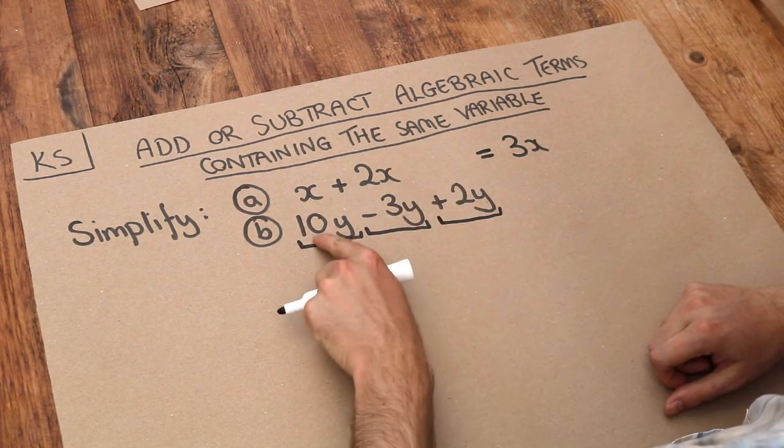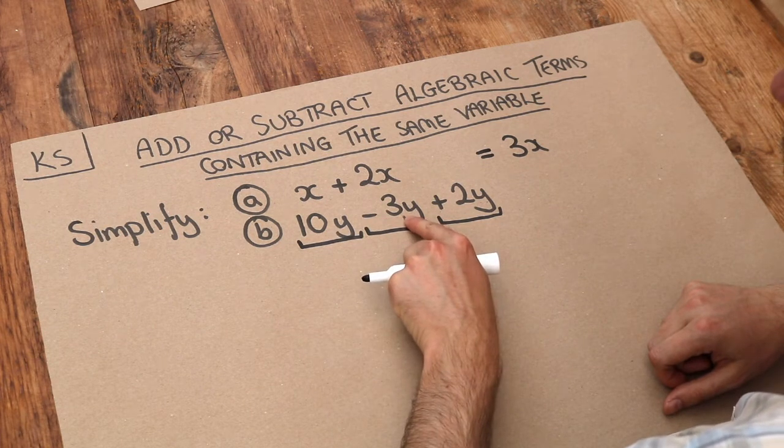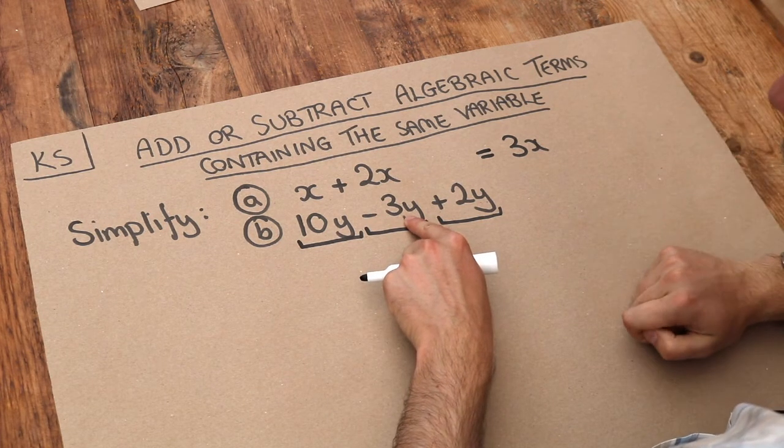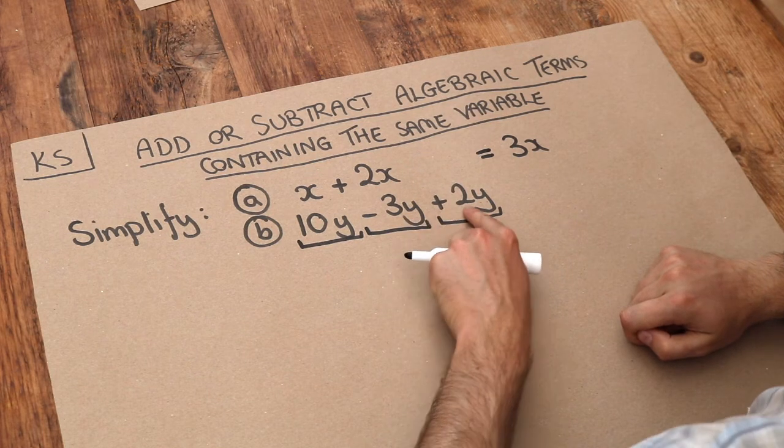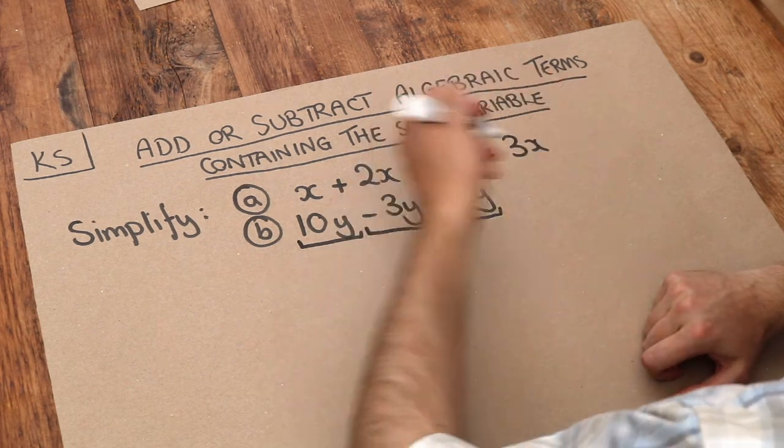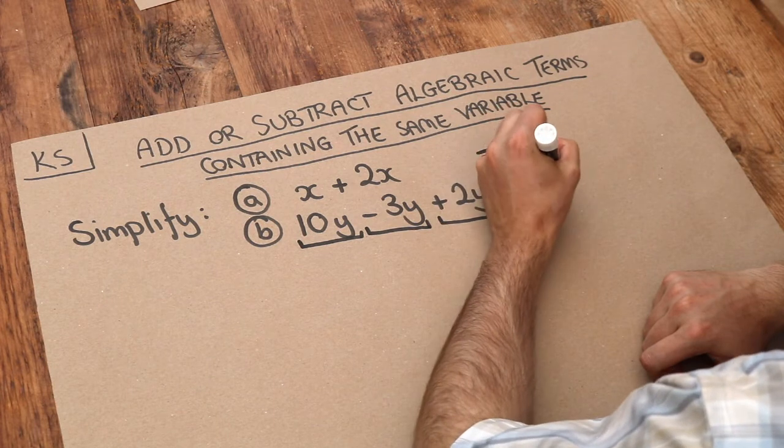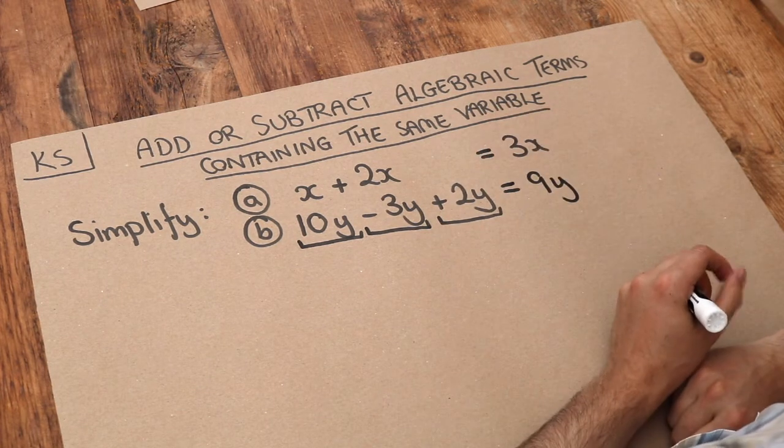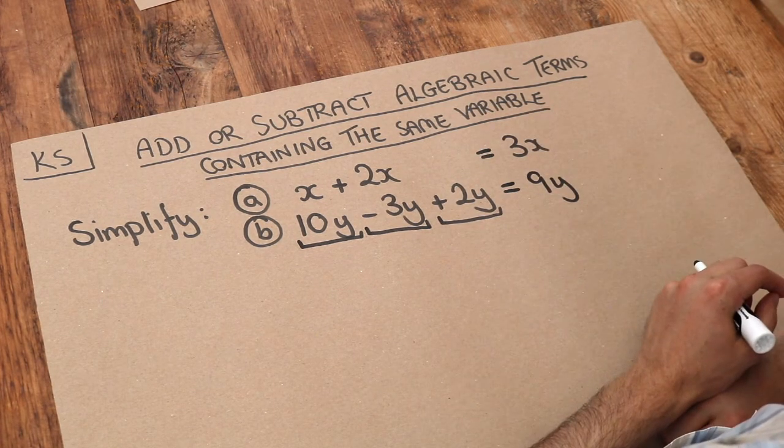So if we have ten lots of y and we subtract three lots of y we now have seven lots of y. And then if we add two lots of y we now have nine lots of y, so this would just simplify to nine lots of y or 9y as we'd write it.